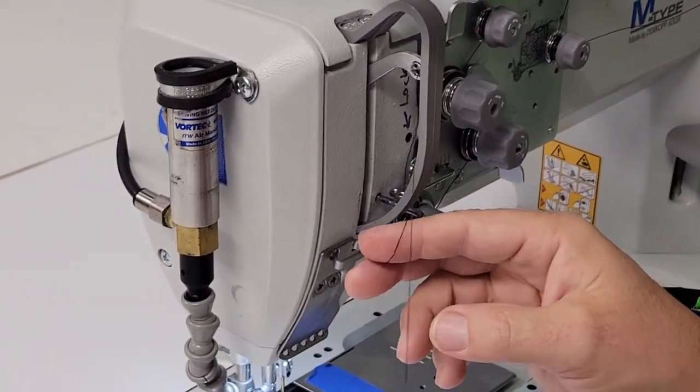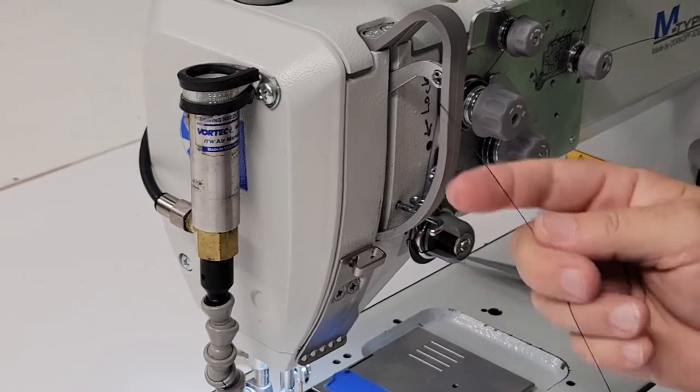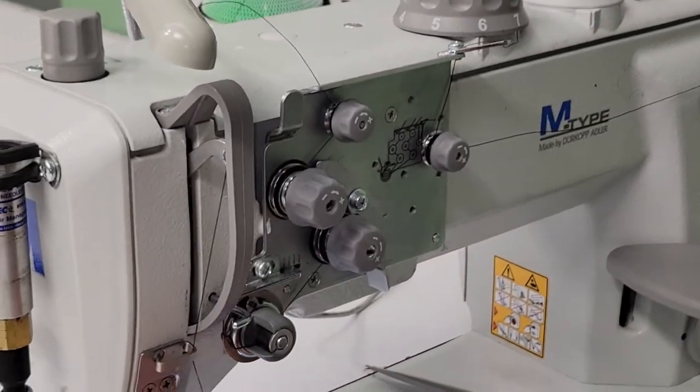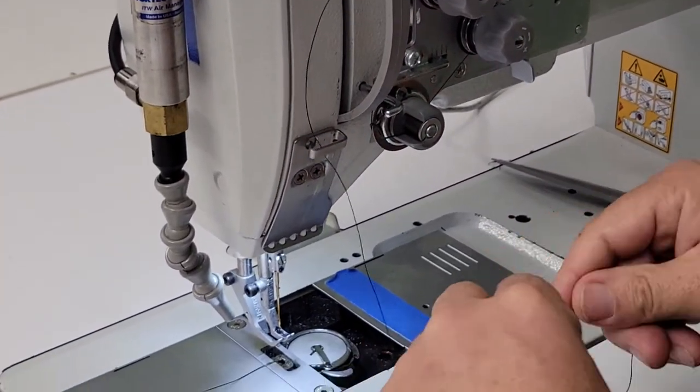Try not to create a nest. If it's done right, it looks like this. Down through the guide, down through the hole that aligns, down through the center hole.